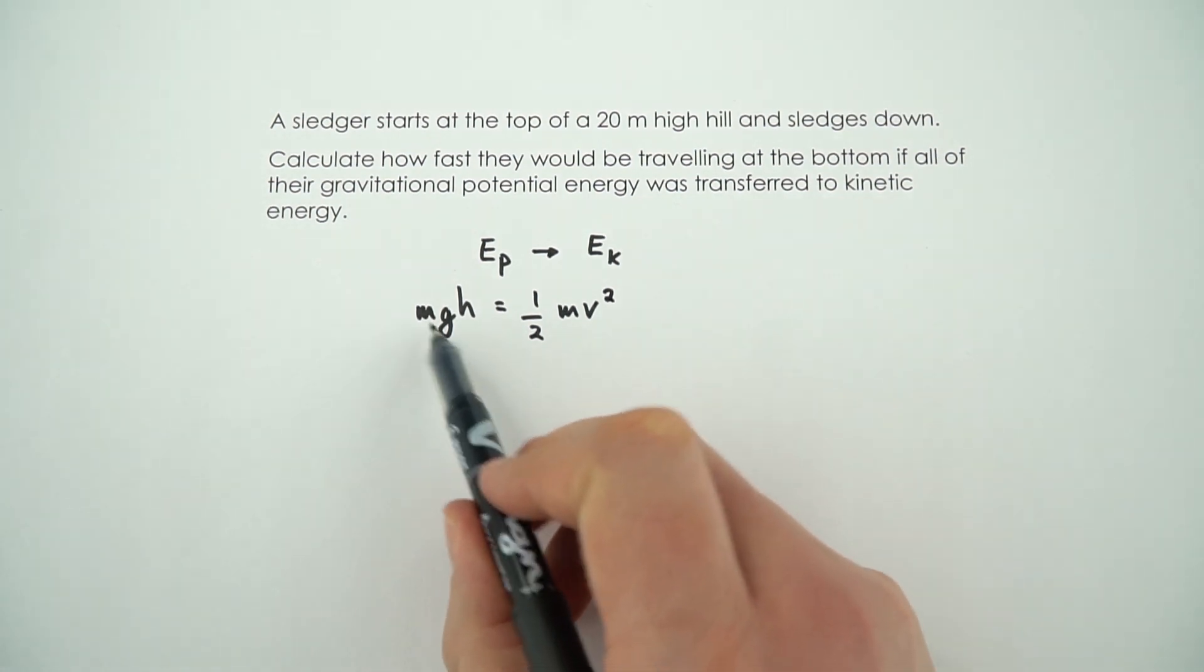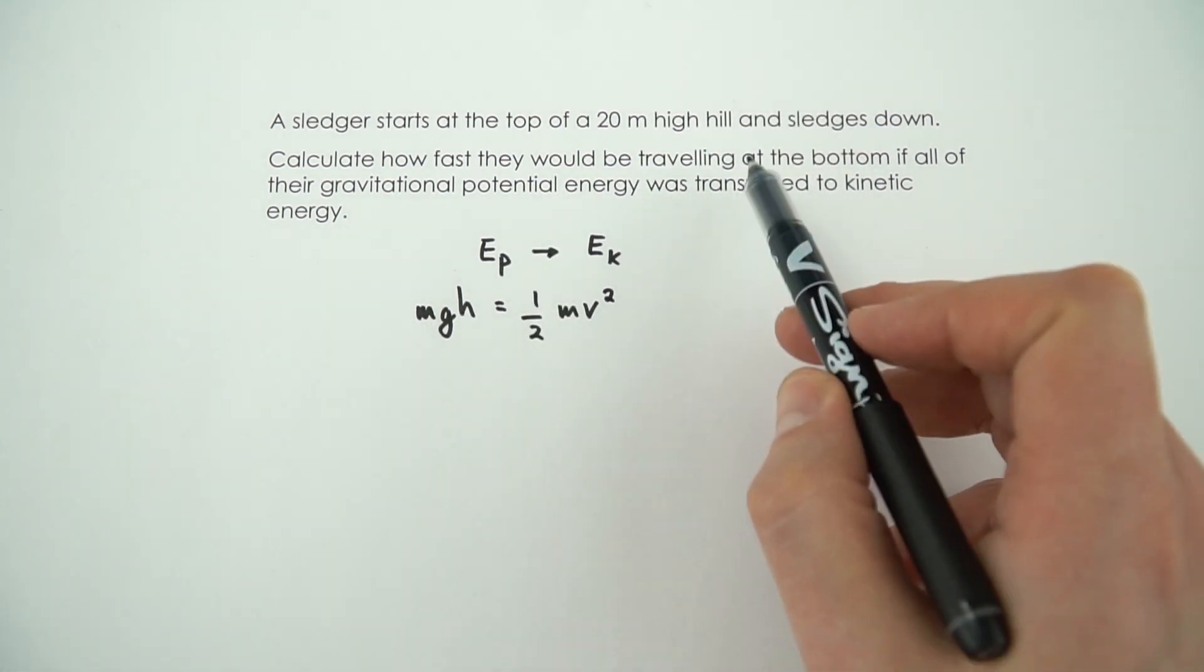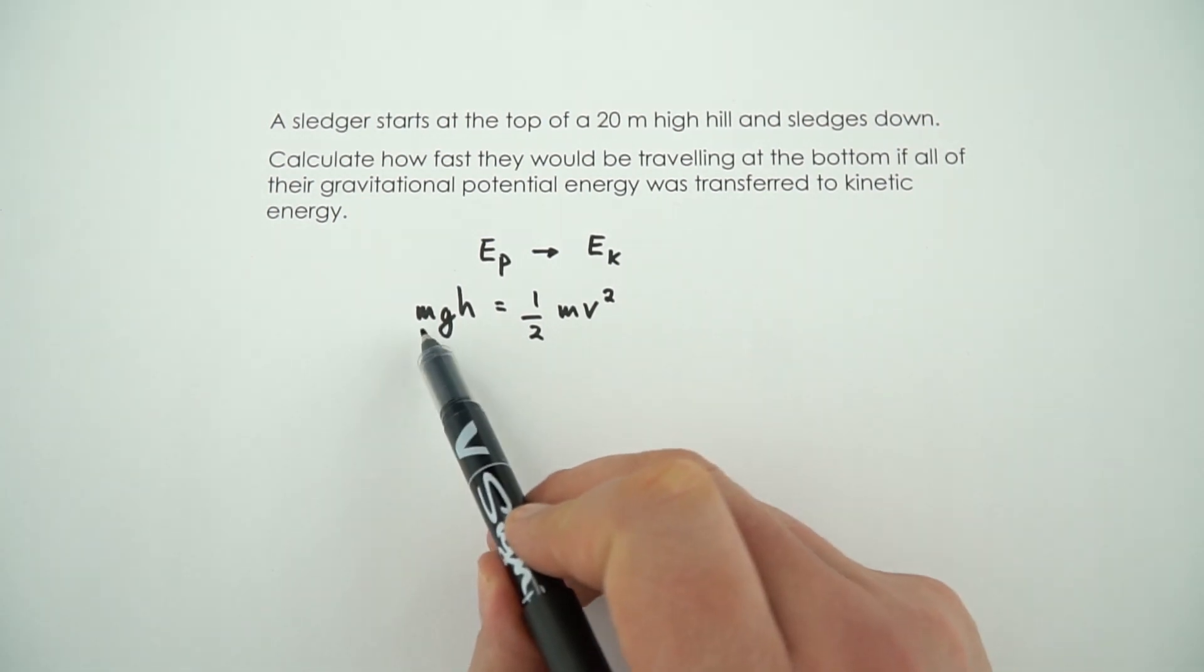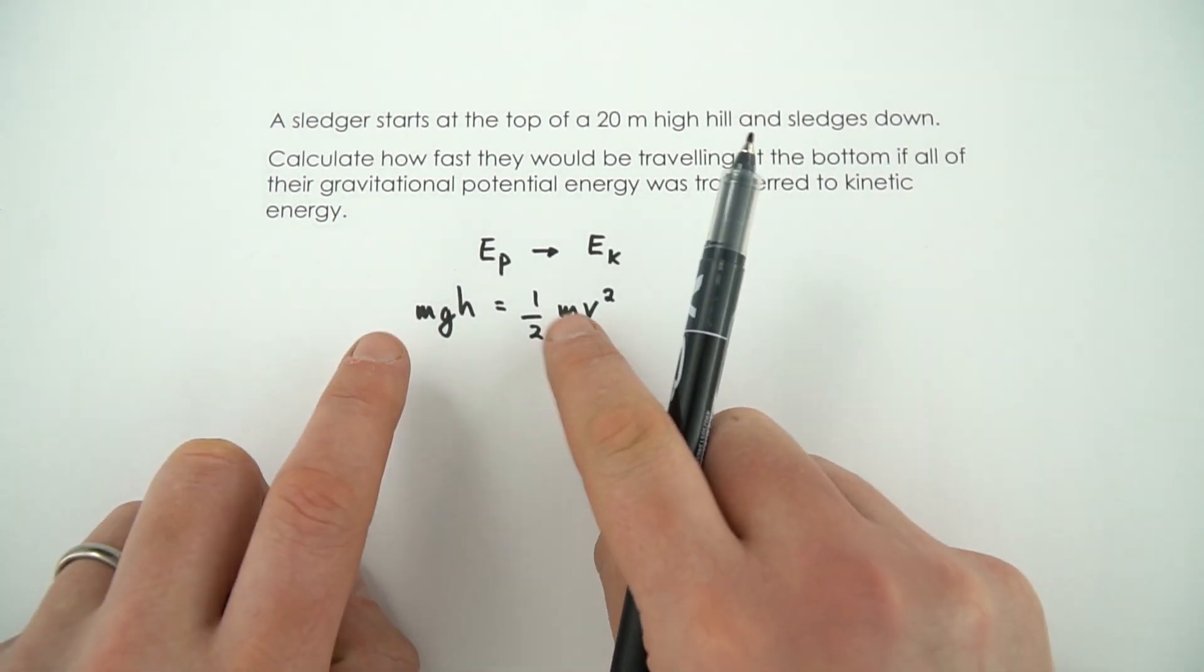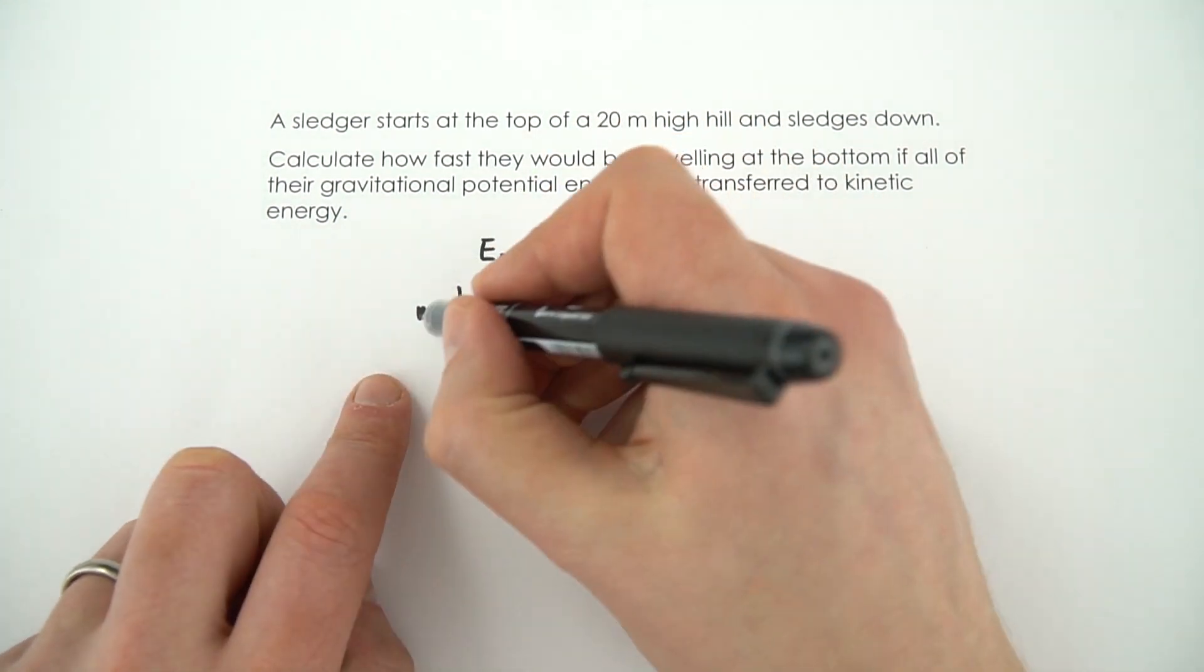Now, the problem is you need to know how heavy this sledger is, but it doesn't have that anywhere in the question. But actually we've got an m here and an m on this side, and because we've got the same term on both sides of the equation, these actually cancel out.